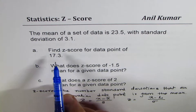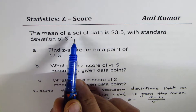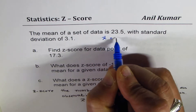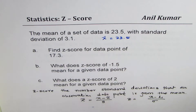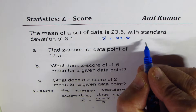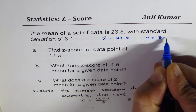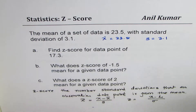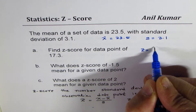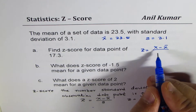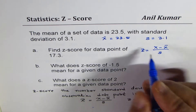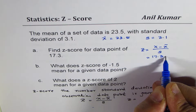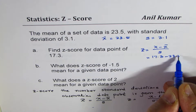For the first question, we are given mean as 23.5 and standard deviation as 3.1. We want to find the z-score for data point 17.3, so x equals 17.3. The z-score formula is: z equals x minus x-bar divided by the standard deviation.